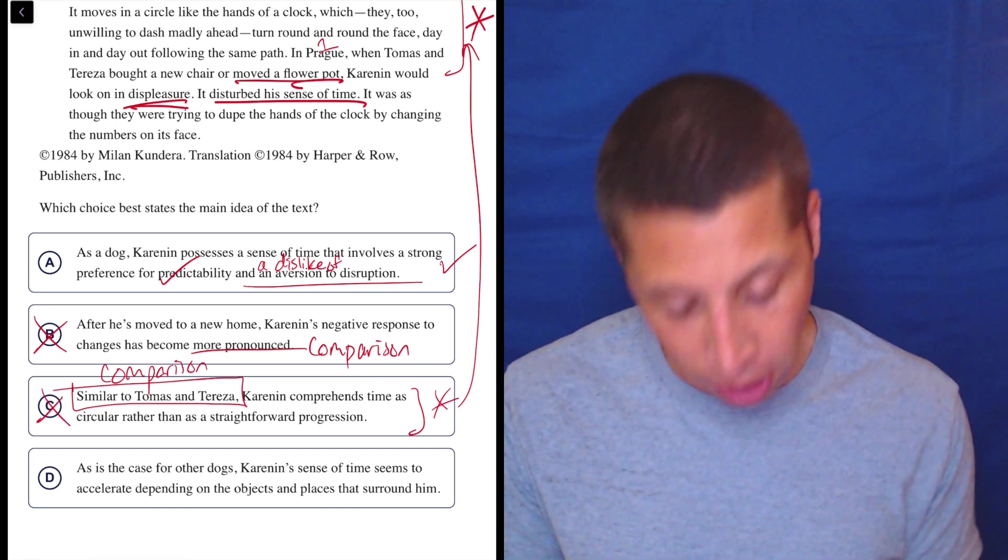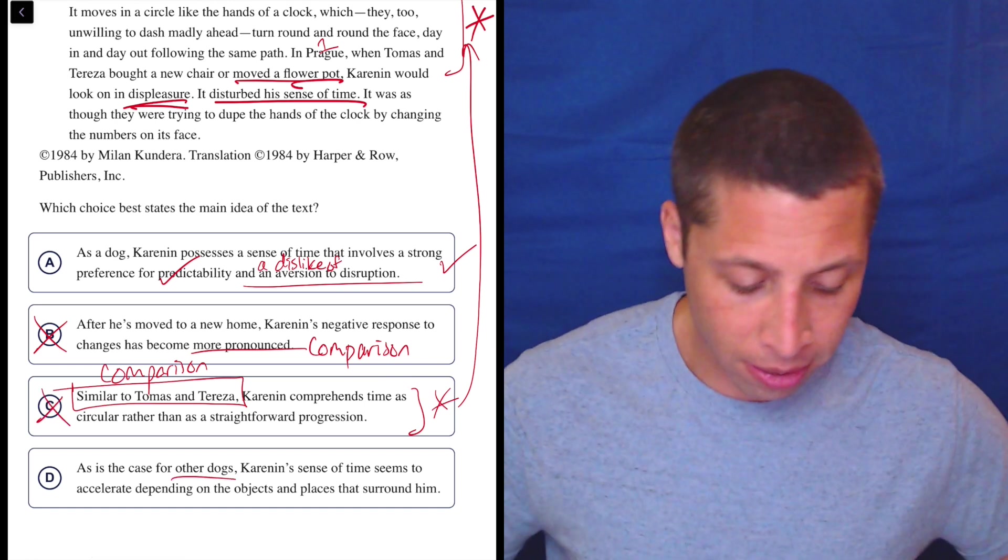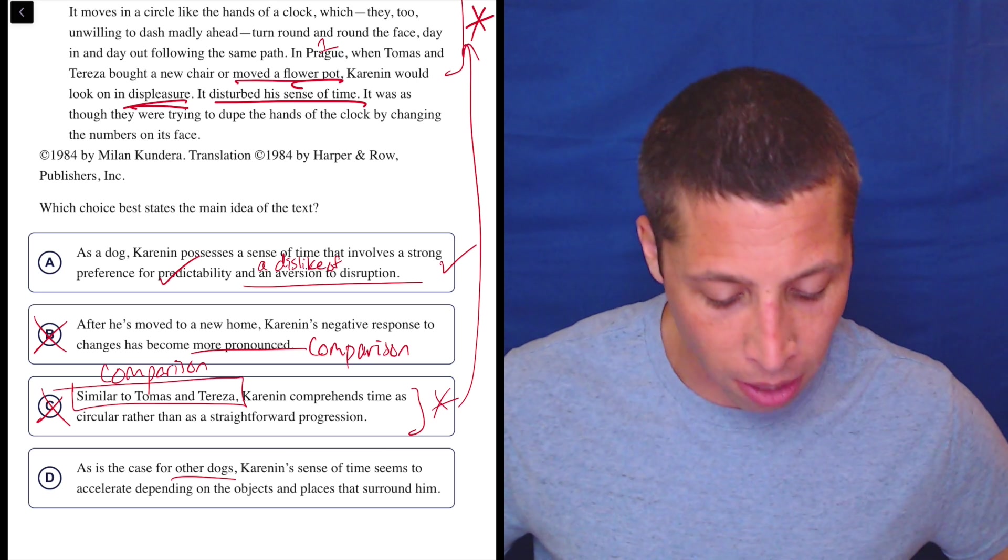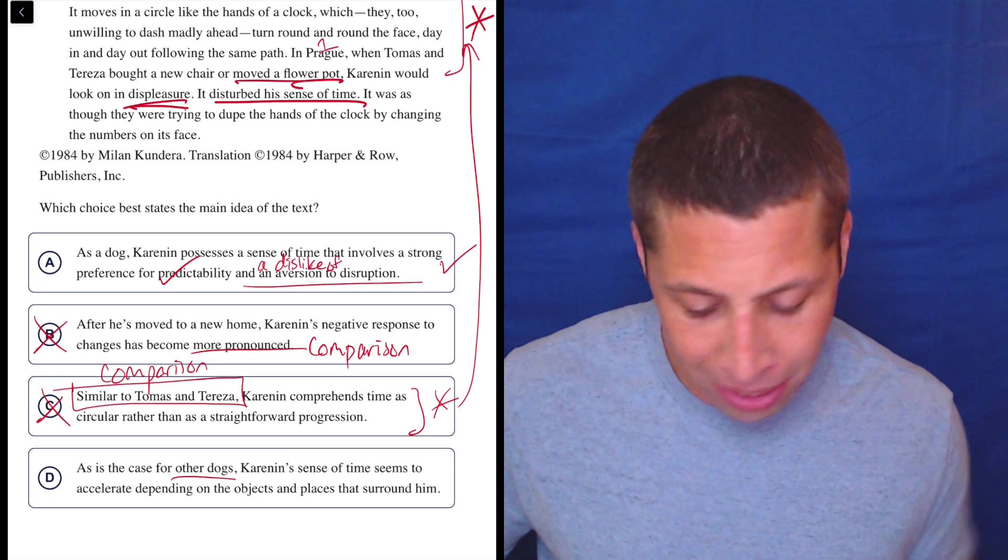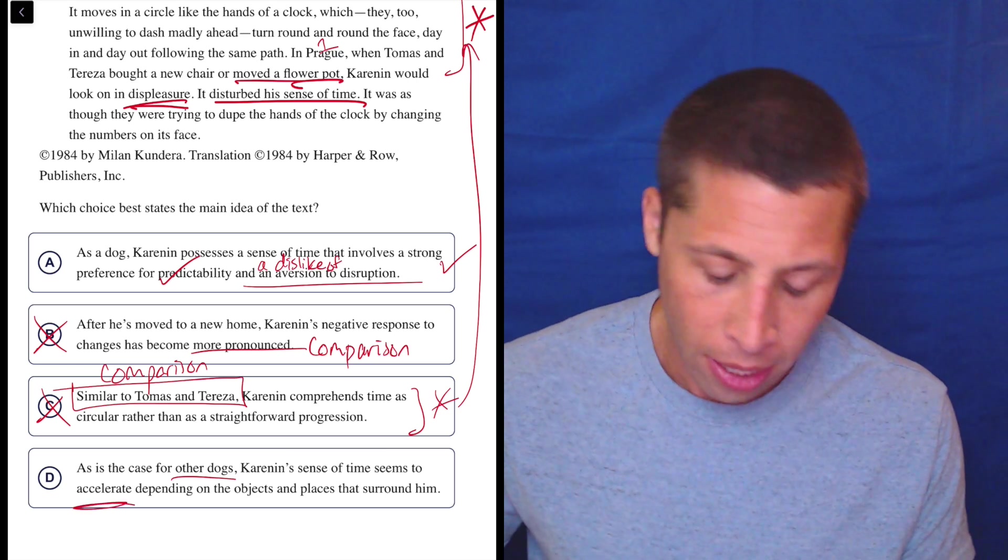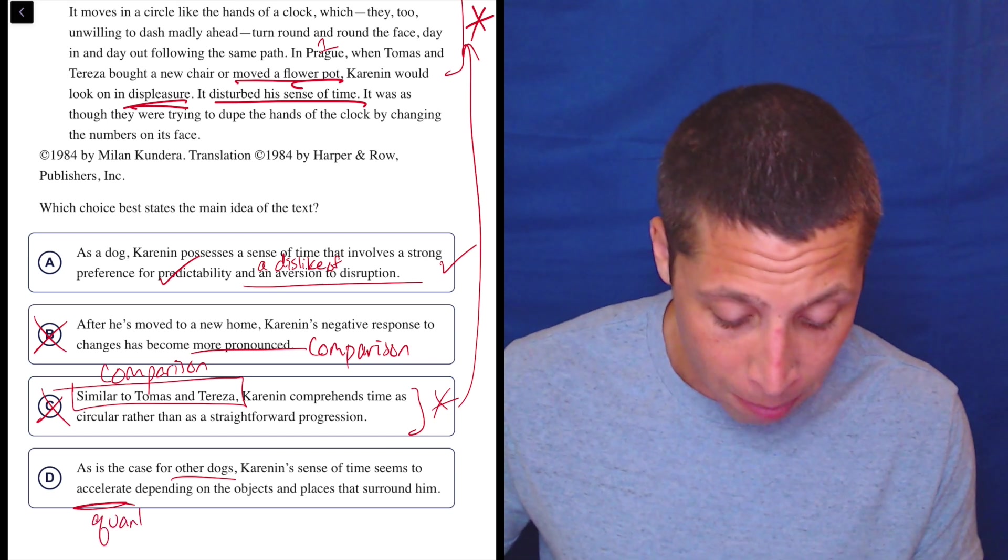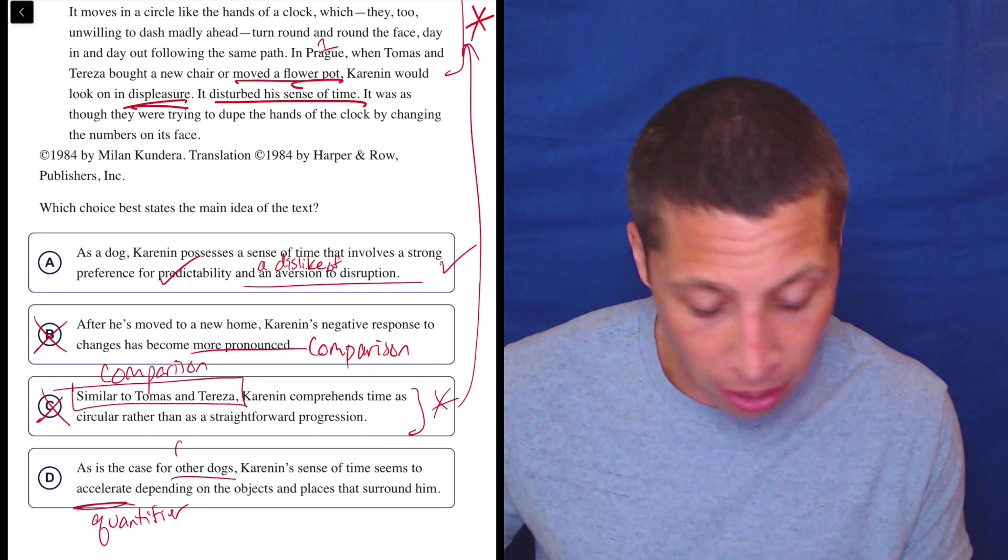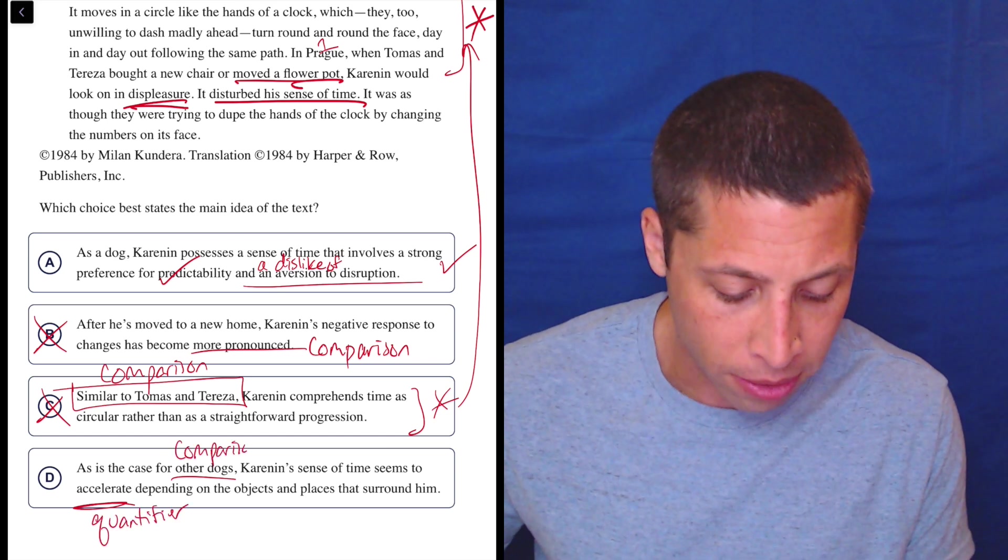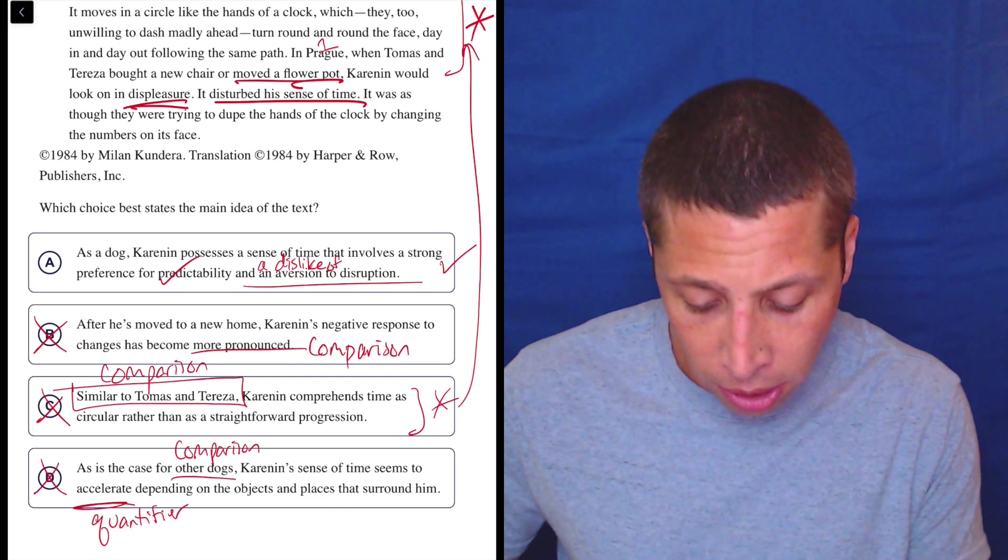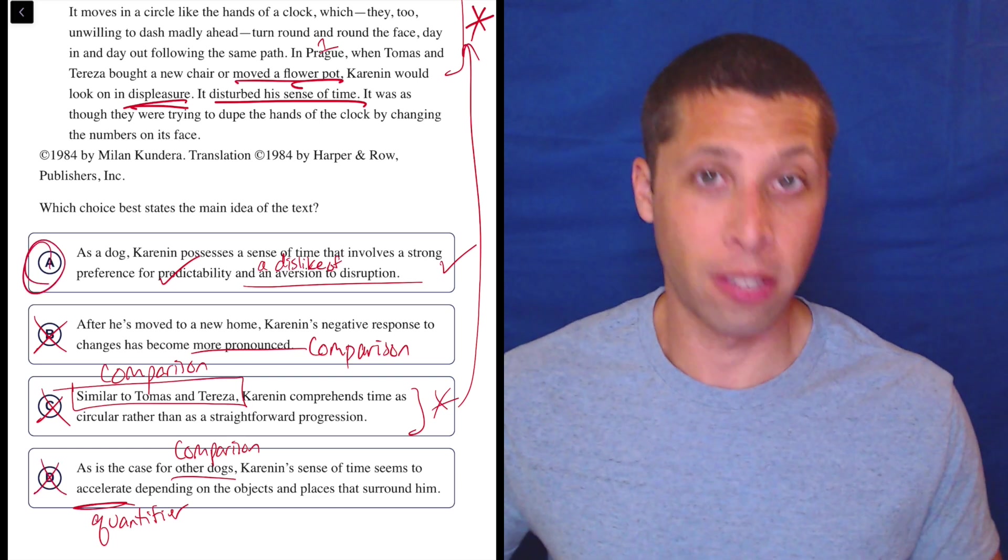D, as is the case for other dogs. Another comparison. Karenin's sense of time seems to accelerate depending on the objects and places that surround him. Again, it's not about a change. This is another kind of quantifier maybe word. And then other dogs. Are we comparing him to other dogs? I don't think so. It's just about the one dog. So just leave it at that.